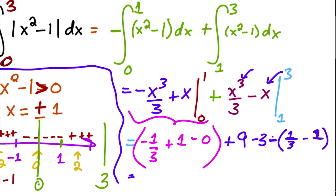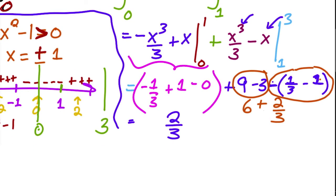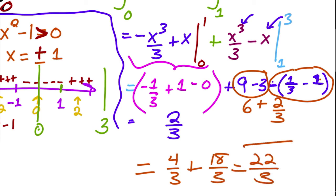So we have one minus one third, which is two thirds. Then nine minus three is six. And one third minus one is negative two thirds, times that negative gives plus two thirds. So two thirds plus two thirds is four thirds, plus six, which is 18 thirds. The final answer is 22 over three.